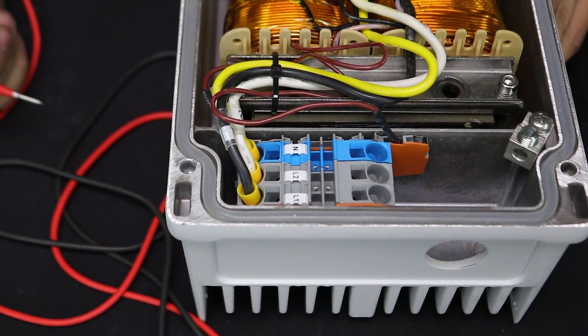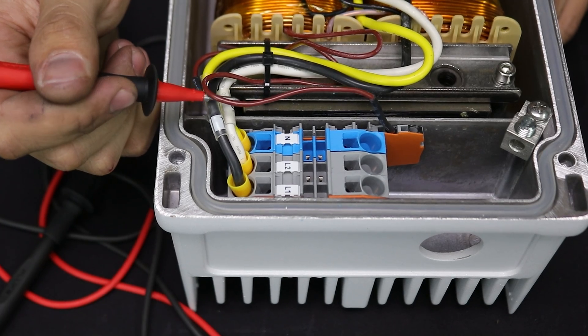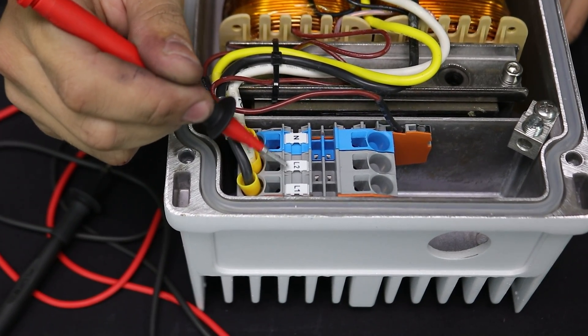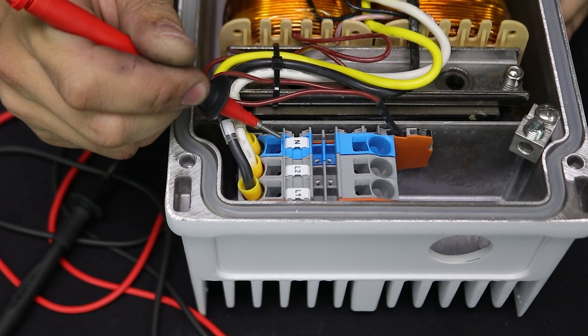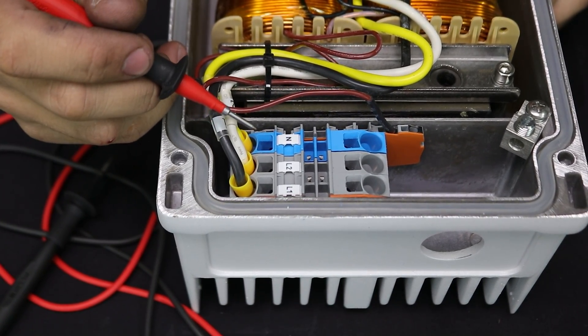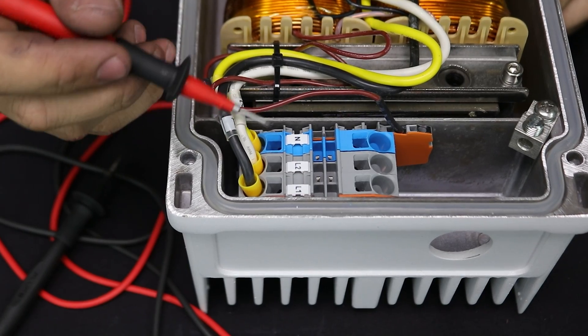Here in this auto transformer, we have a terminal block with quite a few connections here. We have L1, L2 and neutral and that should be common across most all auto transformers. Now this one, this is the SolarEdge auto transformer.